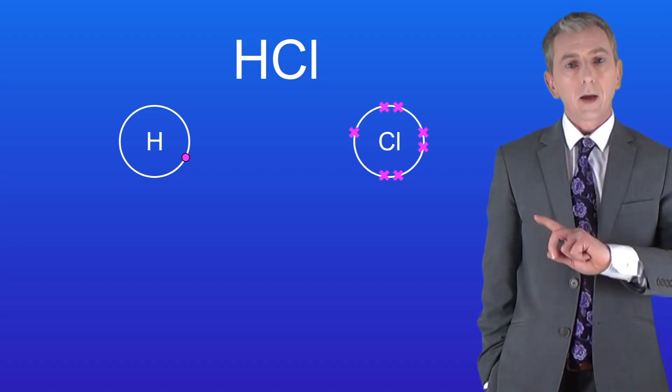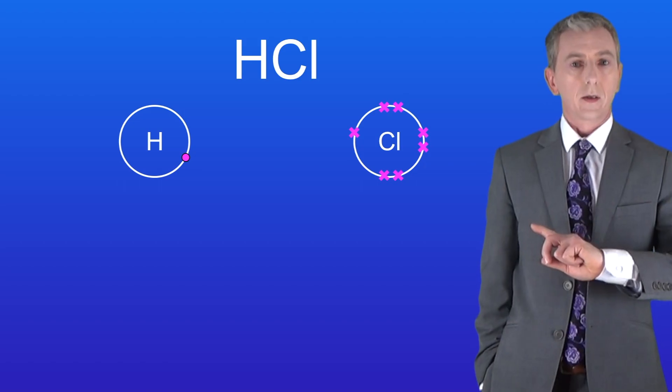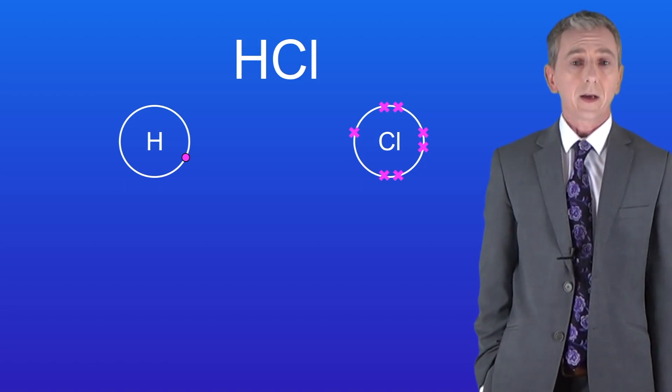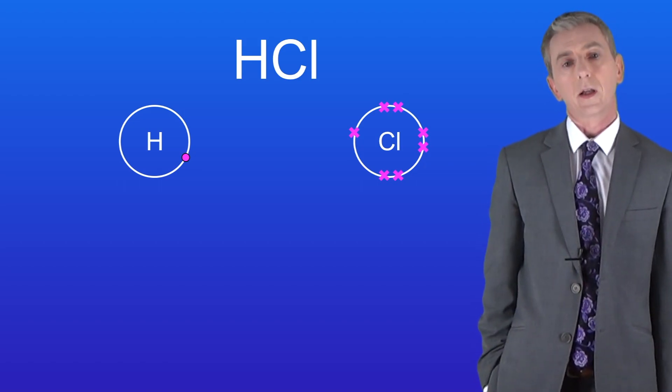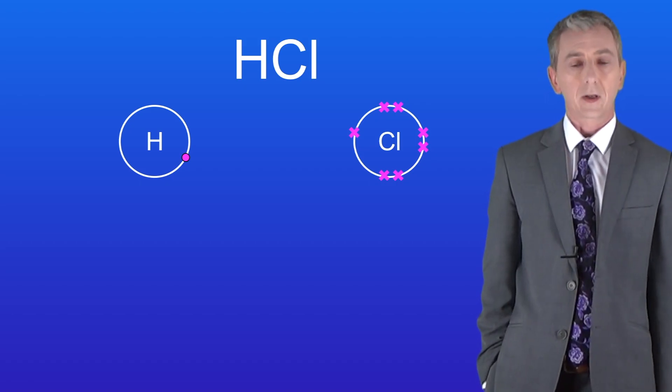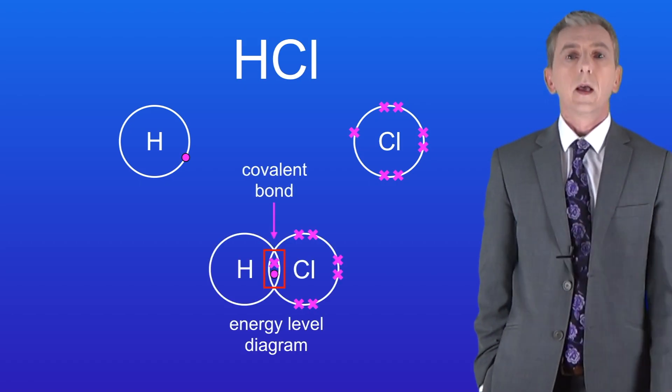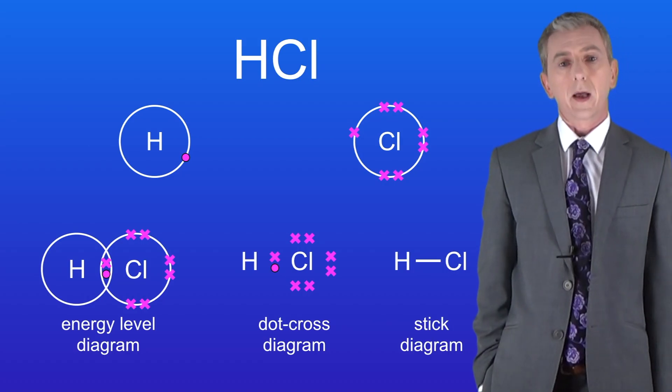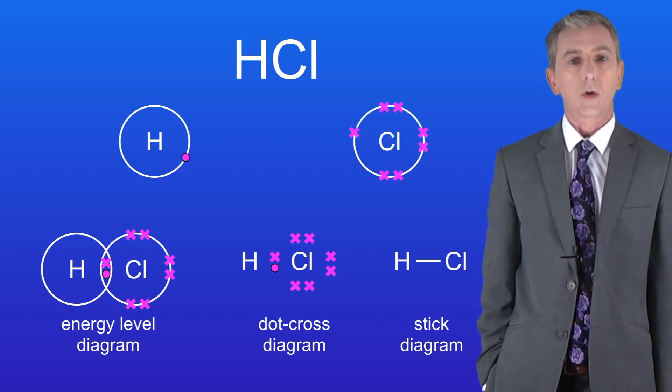Okay well here are the atoms of hydrogen and chlorine. Both need one extra electron to achieve a full outer energy level and they do this by overlapping their outer energy levels like this. Here are the dot cross diagram and the stick diagram for hydrogen chloride.